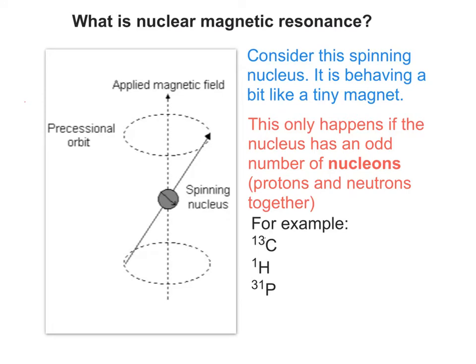If you had an atom that had an even number of nucleons, in that case it wouldn't spin. So just to sum this up, this spin only happens if there's an odd number of nucleons, not if there's an even number.